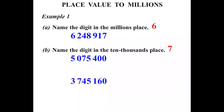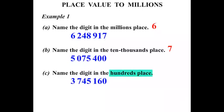This next number: three million, seven hundred and forty-five thousand, one hundred and sixty. We need to name the digit in the hundreds place. Ones, tens, hundreds — so the answer is one.